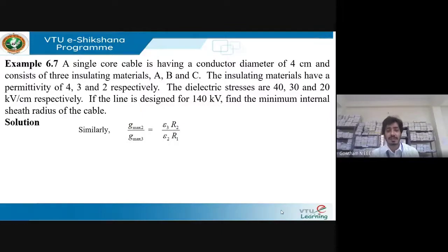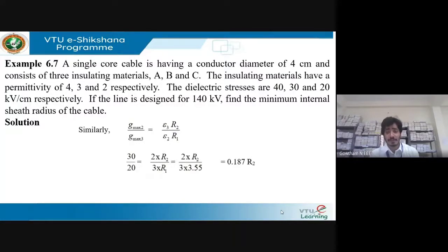Next, we move to Gmax2 and Gmax3, since three dielectric stresses are given for three insulating materials and all values must be considered. Gmax2 / Gmax3 = (ε3 × r2) / (ε2 × r1). Substituting these values, we get the value of r2 as 8 cm.